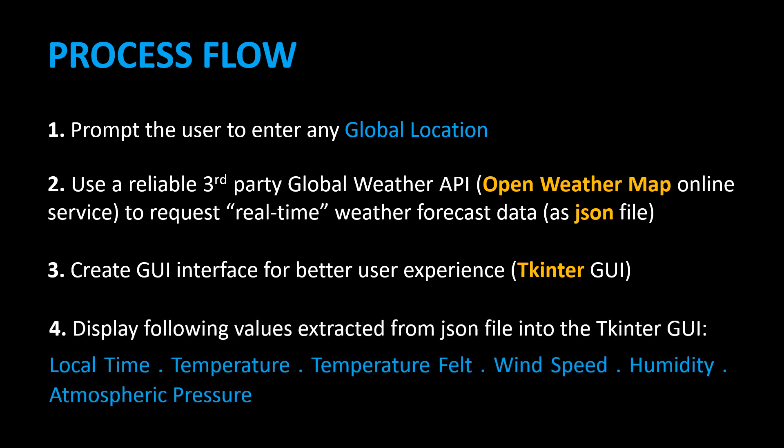Number four: display the following values extracted from the JSON file into the Tkinter GUI — local time, temperature, temperature felt, wind speed, humidity, and atmospheric pressure.